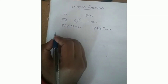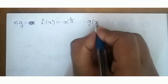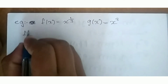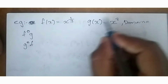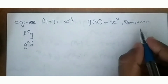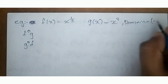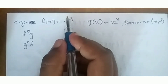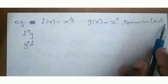Let's take an example. F of x is equal to x raised to 1 by 3, and g of x is equal to x cubed. We want to talk about the domain. The domain of x cubed is minus infinity to infinity. The domain of x raised to 1 by 3, which is a cube root, is also minus infinity to infinity.